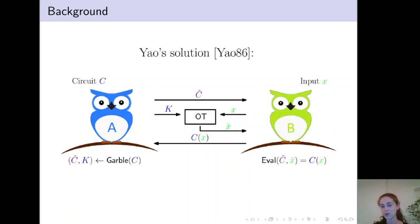Yao suggested the following solution to this problem. First, Alice garbles the circuit, and I will show you a bit later how this precisely works.